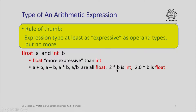On the other hand, for the expression 2 * b where b is an integer and 2 is an integer constant, both operands are int, so the expression has type int. Whereas for 2.0 * b where b is int and 2.0 is a floating point constant, the type of the expression must be as expressive as its operands, so here it has to be float.